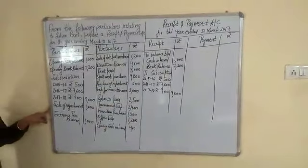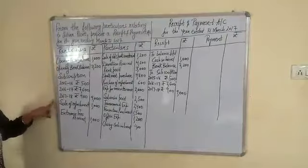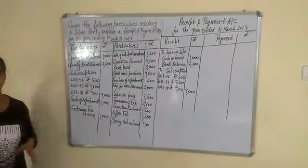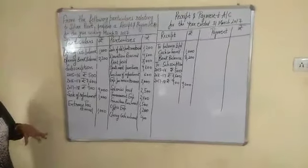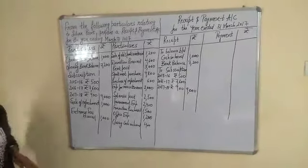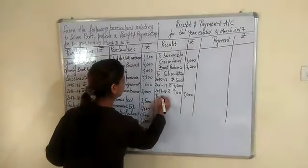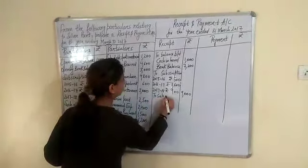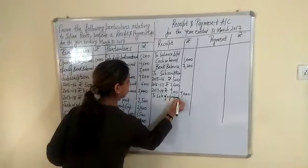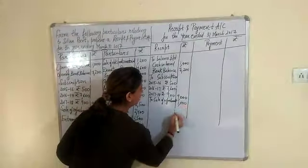Sale of refreshment — when we sell anything, that time we get receipts, meaning income is coming in, so money is coming to us. Therefore it appears on the receipts side. We write here 'To Sale of Refreshment', which is rupees 1,000.